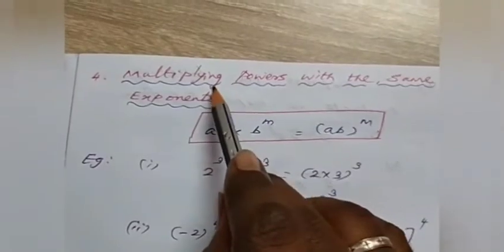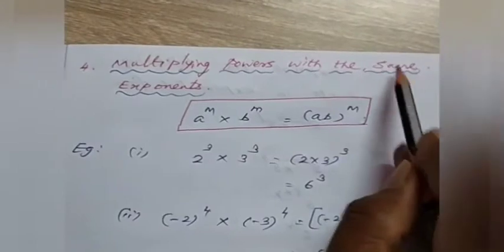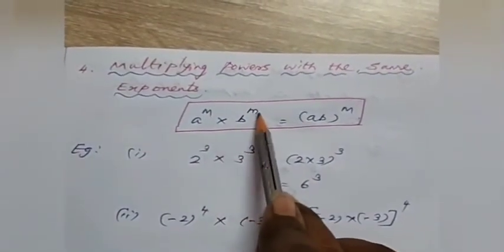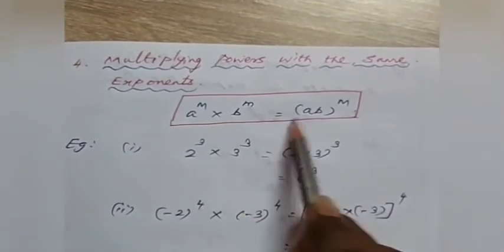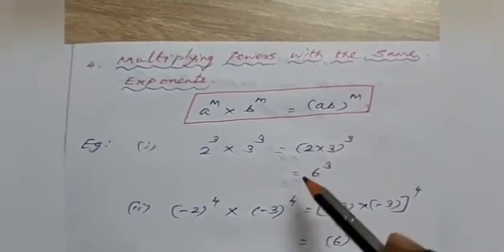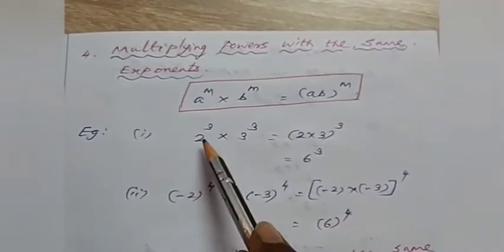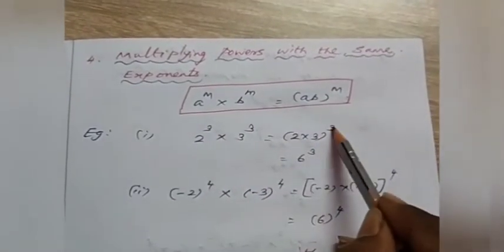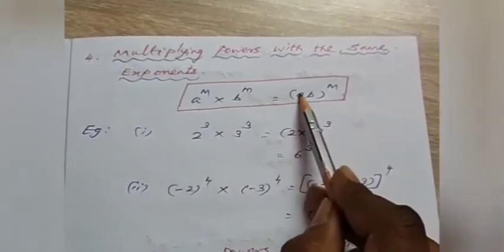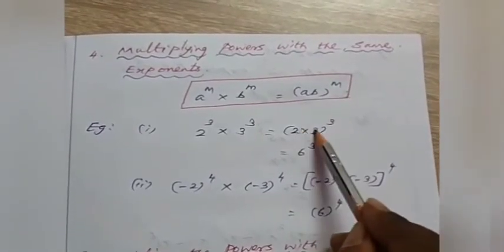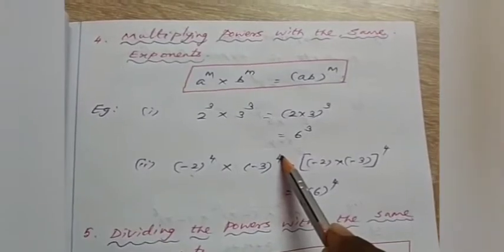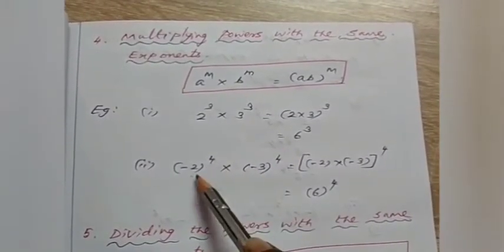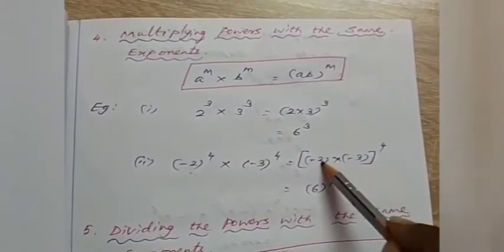The fourth law is multiplying powers with the same exponents. The formula is: a power m into b power m equals a into b the whole power m. For example, 2 power 3 into 3 power 3 — the powers are the same, so we get 2 into 3 whole power 3. Since 2 threes are 6, the answer is 6 power 3. Second example: minus 2 whole power 4 into minus 3 whole power 4. The powers are the same, so multiply: minus 2 into minus 3 whole power 4. Minus into minus is plus, and 2 threes are 6, so the answer is 6 to the power 4.